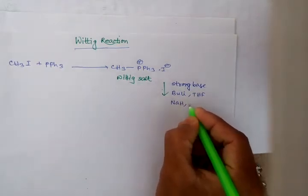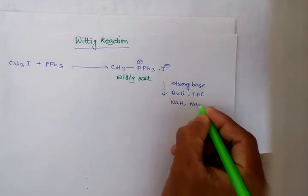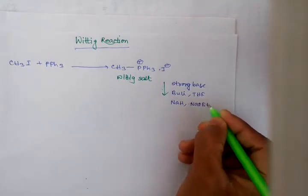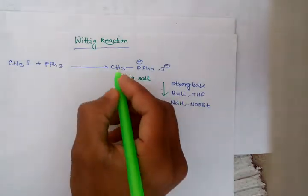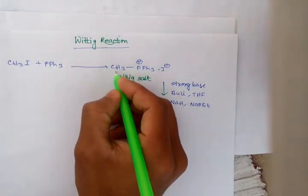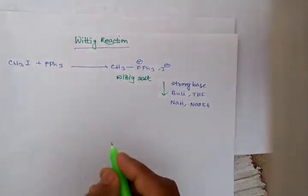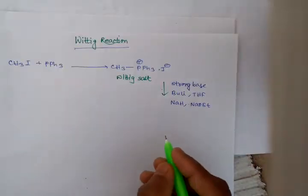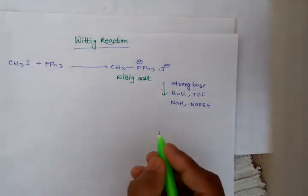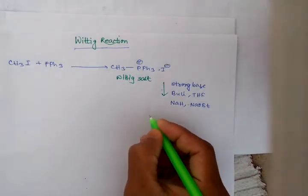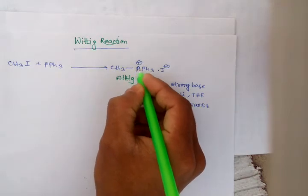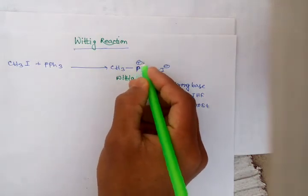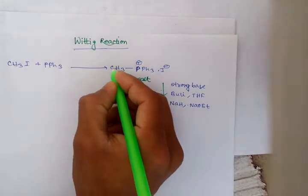This base abstracts the CH3 methyl hydrogen. Because of the positive charge on the phosphorus atom, this CH3 hydrogen will be acidic.